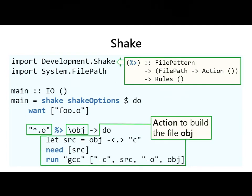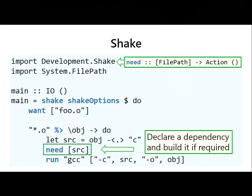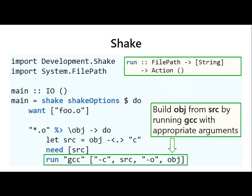We define the rule using the percent-greater operator: on the left-hand side a file pattern, on the right-hand side a function from files to actions. Given a file that matches the pattern, we specify what actions to perform to build it. The Action monad is an extension of IO with additional functionality. We compute the source name by replacing the extension using the standard file path manipulation library. Then we declare a dependency using 'need', saying this source file is our dependency — if it changes, the build rule must re-run. Finally, we invoke GCC with usual parameters: dash-C source dash-O object file.